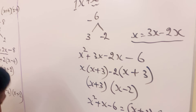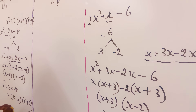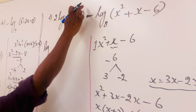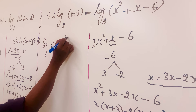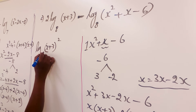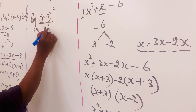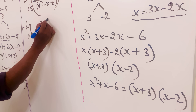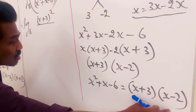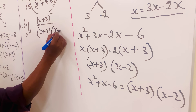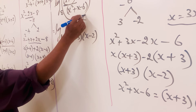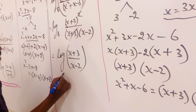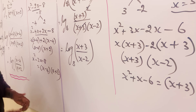Now we can go to the question part. Using the power rule, we bring the power down: log of (x plus 3) squared over (x squared plus x minus 6), to base 8. This equals log base 8 of (x plus 3) squared over (x plus 3)(x minus 2). The (x plus 3) terms cancel, and we get log of (x plus 3) over (x minus 2), to base 8. This is the final simplified form.